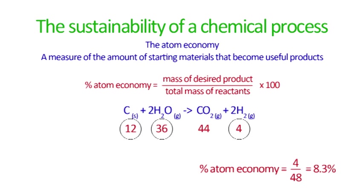This is low and shows that this is not the most sustainable way of producing hydrogen. A number closer to 100 percent shows a more sustainable process as you're converting more of the reactants to useful products and therefore producing less waste.